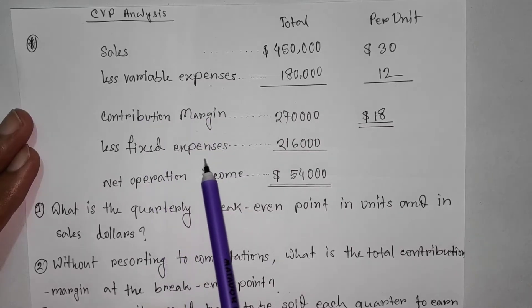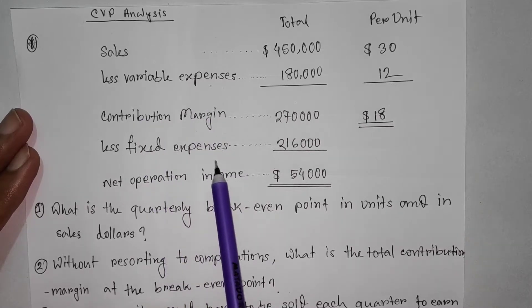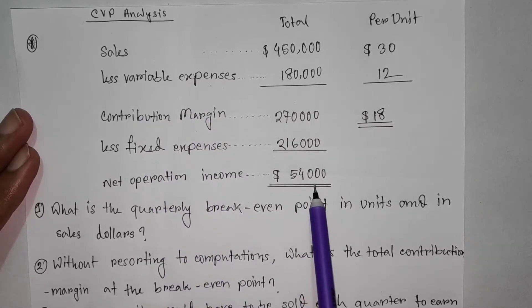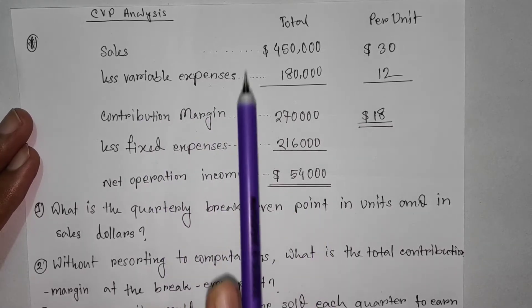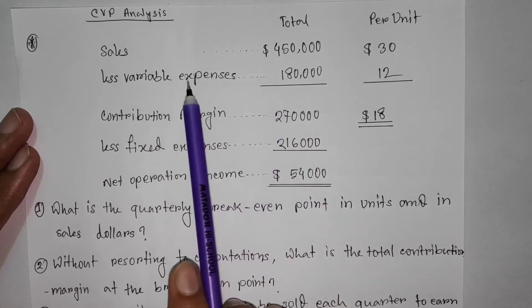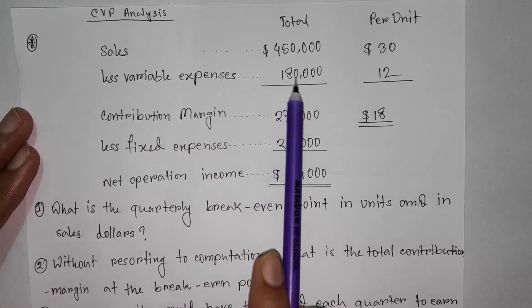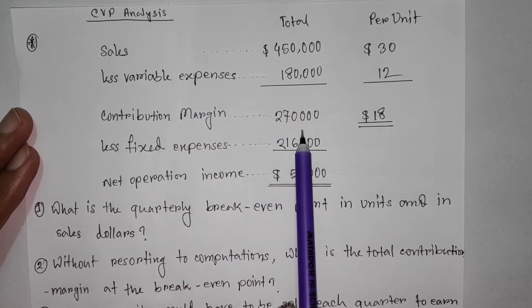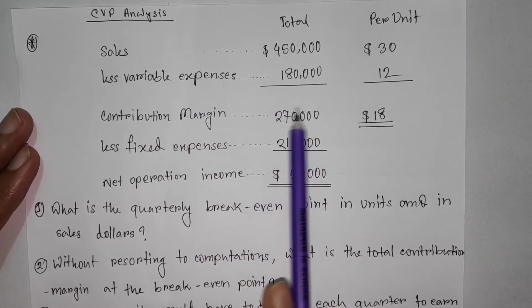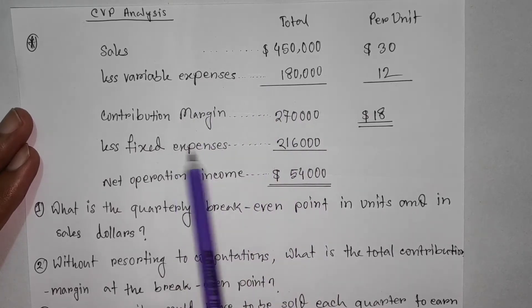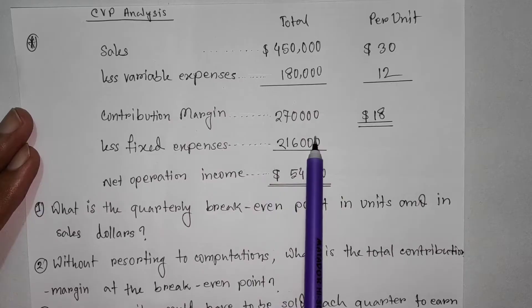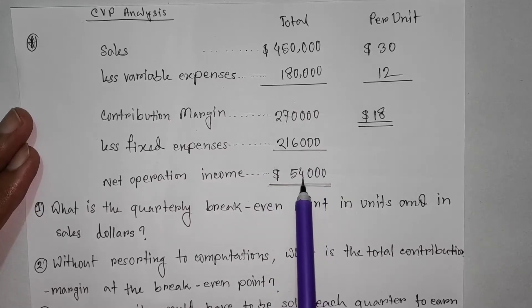So we have fixed expense. Sales are less variable expenses, which is equal to the contribution margin. And the contribution margin minus fixed cost equals net operating income.